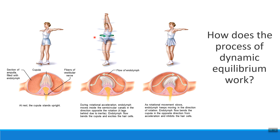Then we start spinning. When we start spinning, the fluid inside our semicircular canals starts spinning too, pushing on the cupula. As it pushes on the cupula, the hair cells bend and they send lots and lots of neurotransmitters — lots of messages to the brain. When we stop spinning, it feels like the fluid in our ears is flowing the opposite direction, which is the dizziness sensation we feel. We go from sending a lot of messages to sending no messages, slamming those mechanically gated channels shut.